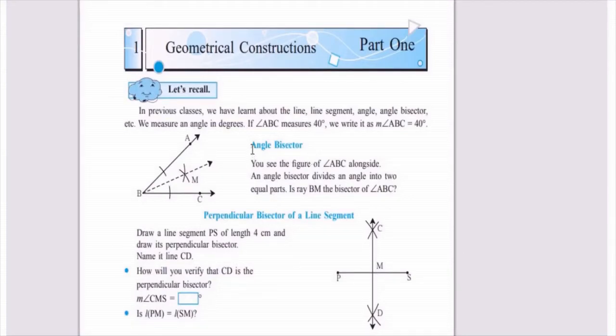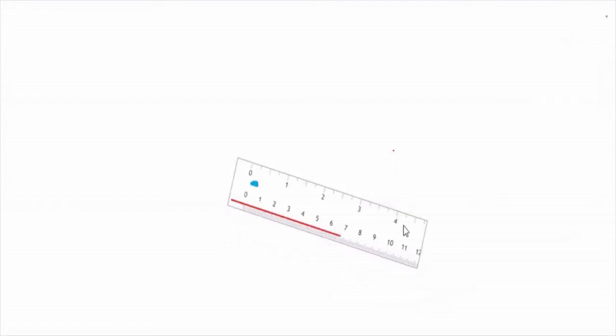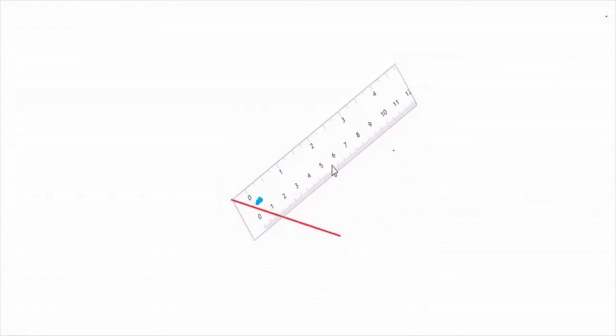First one is about angle bisector, then perpendicular bisector of a line segment. Let me show you how angle bisector is done. To draw an angle, I need a ruler first. This is a ruler. I am going to draw a simple angle over here. Take the ruler and draw an angle here — we are going to have an angle bisector.